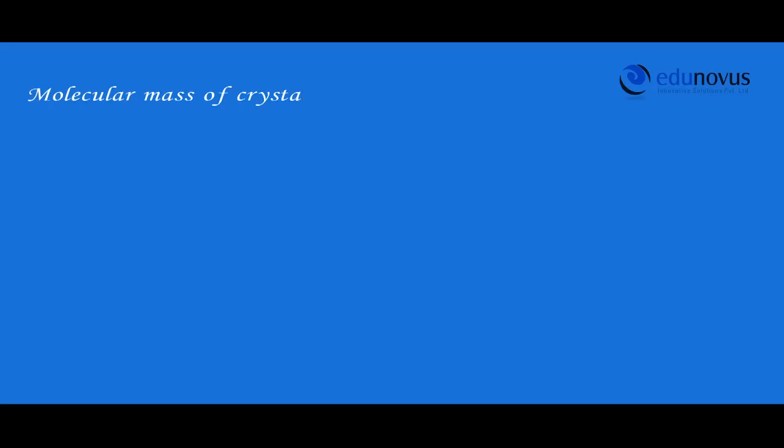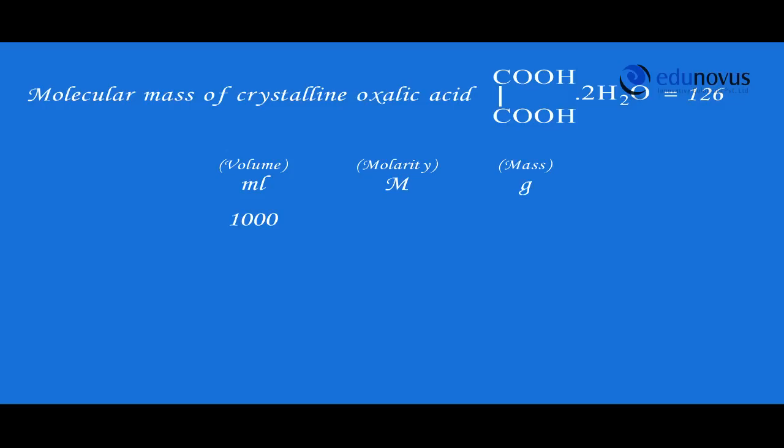As you know the molecular mass of the crystalline oxalic acid is 126 grams. Hence for preparing 1000 ml of 1 molar oxalic acid we need 126 grams of oxalic acid crystals. Therefore for preparing 250 ml of 0.1 molar oxalic acid, the crystals required are 3.150 grams.